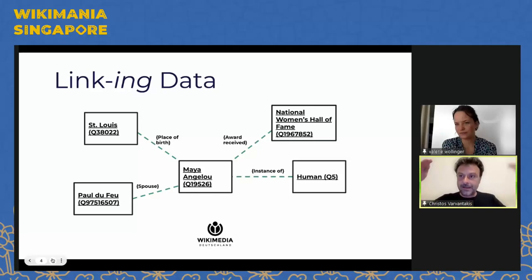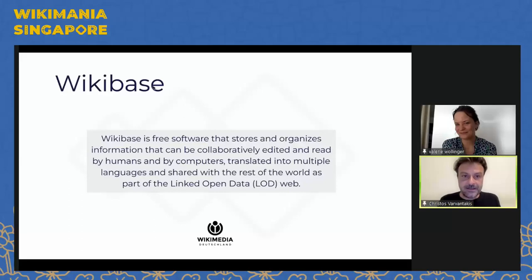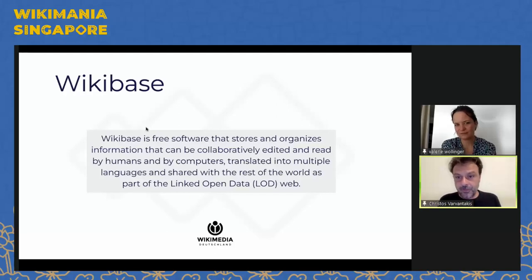Unlike a traditional database, St. Louis is an item in itself with its own properties. In this way, as an item with properties and various statements — some of which are again items in themselves — you are able to create a much more rich knowledge base, rather than the traditional database's top-down organization of data. Thus, Wikibase is the free software that stores and organizes information which can be collaboratively edited and read by both humans and computers, translated into multiple languages, and shared as part of the linked open data web.